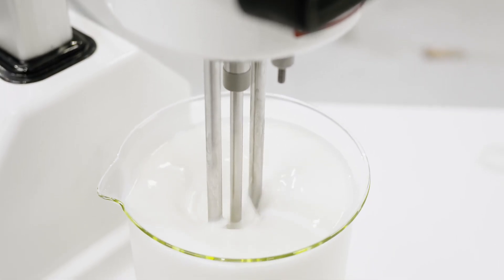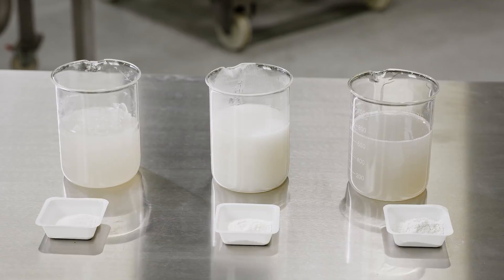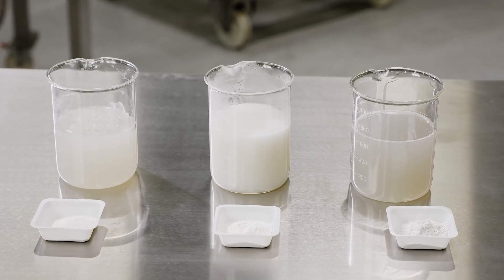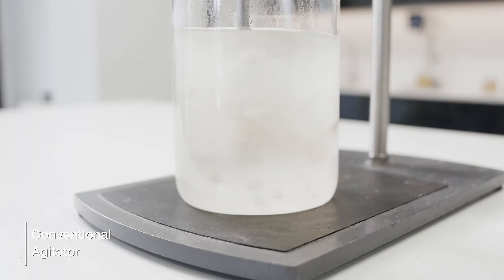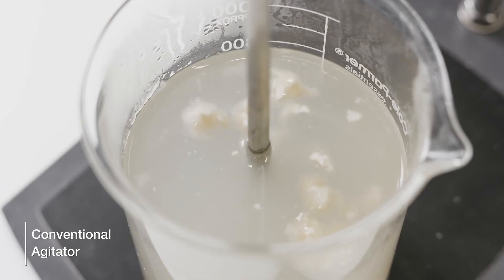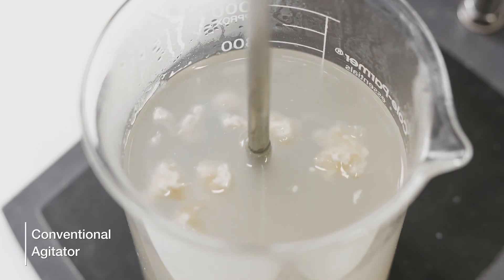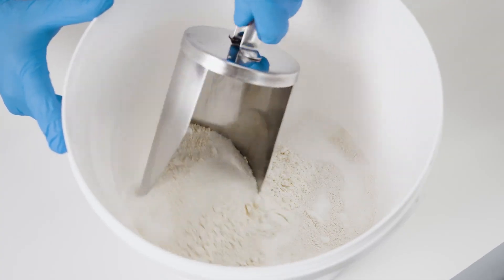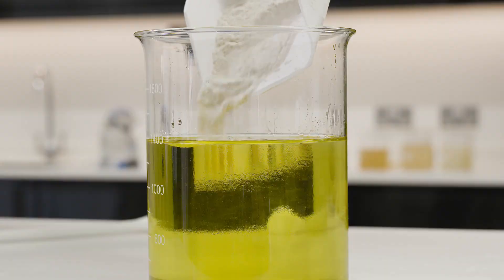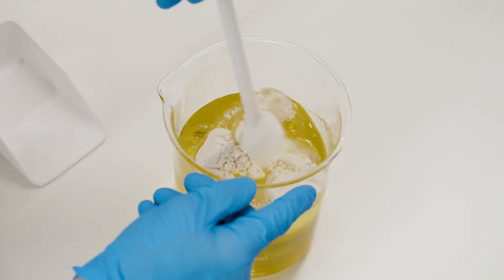As with most other gums and thickeners, all grades of carrageenan have a tendency to form agglomerates when added to liquids, with undissolved dry powder becoming coated in an outer gel. Conventional mixers can't readily break these agglomerates or fish eyes up, so the powder is often premixed with other dry ingredients or into the oil phase to make it easier to disperse.